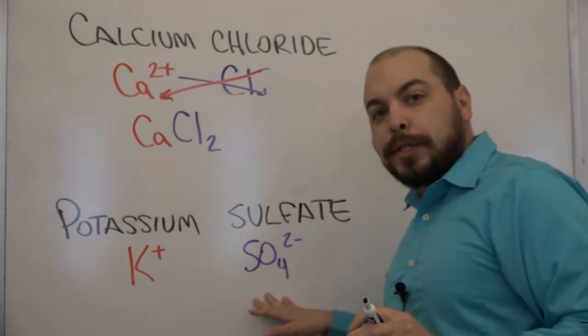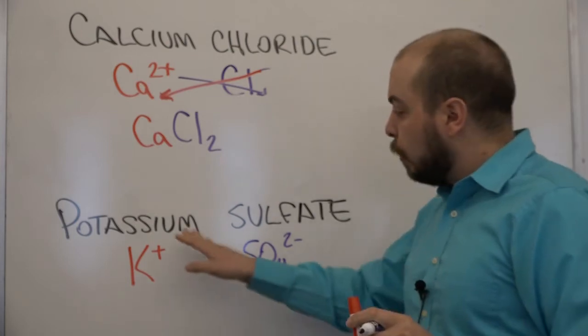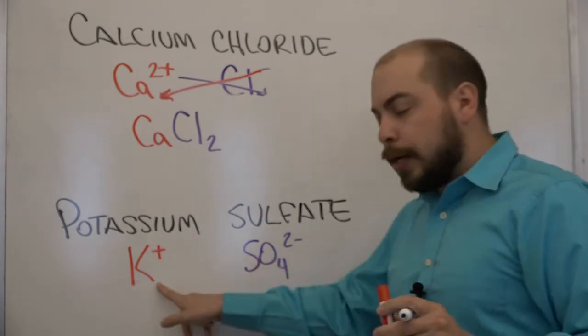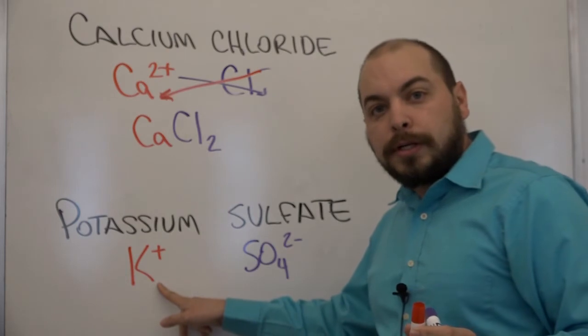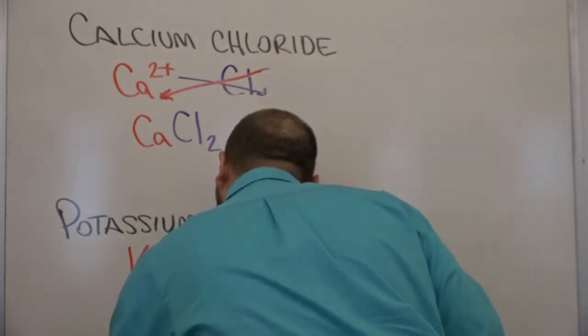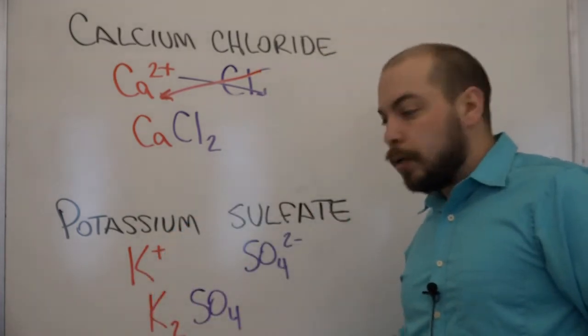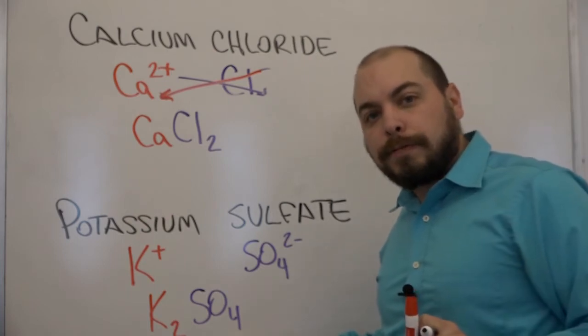Again we can use the criss cross method to determine the overall formula for this compound. Where the plus one comes down here and the minus two comes down here as subscripts. So what we end up with as a result is K2SO4. This compound represents potassium sulfate.